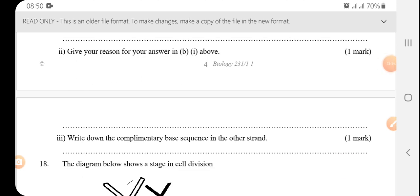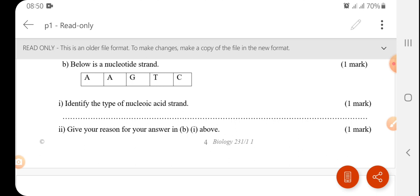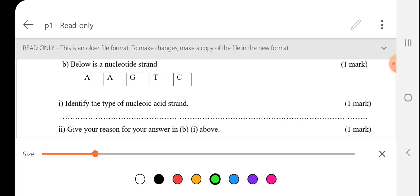So if it was RNA the T will be replaced by U, uracil. Write down the complementary base sequence on the other strand. So the other strand will be, let me write it down. Adenine always combines with thymine, this is also thymine. Guanine always combines with cytosine, so that's a C. Thymine combines with adenine. Cytosine always combines with guanine. So T T C A G.